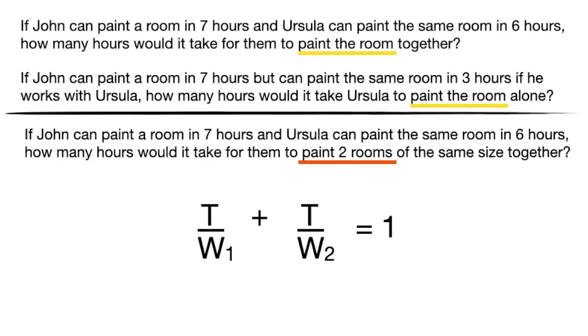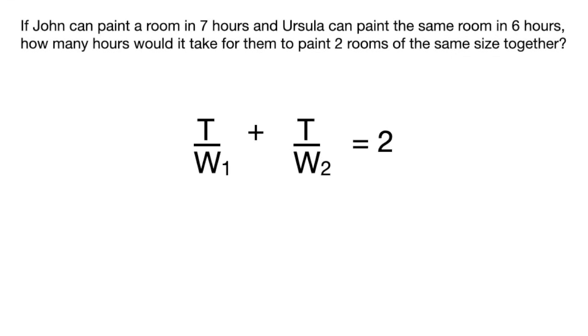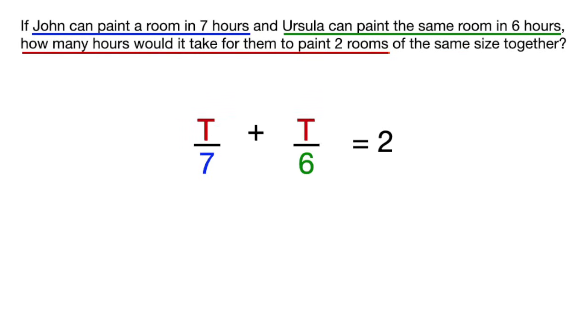Then, with the equation set equal to 2 instead of 1 this time, we'll do what we did before and plug in the other information given, and then solve for t, just like before.